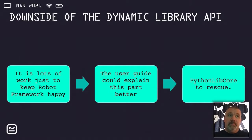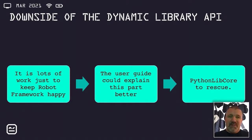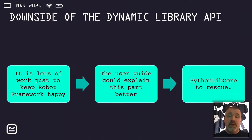But then there are of course downsides. It is actually quite a lot of work just to play nicely with the Robot Framework dynamic library. You have to write a lot of code if you want to get library documentation, arguments, and stuff like that working nicely with Robot Framework. The benefits may be small — you get benefits by having more control, but it may not bring benefits for your immediate users. Also, I think the user guide is a little bit vague on the matter. I feel that pain too, because I used Python Lib Core to learn about the dynamic library. I should write some pull requests for the Robot Framework core to enhance the documentation so it would be easier to understand.